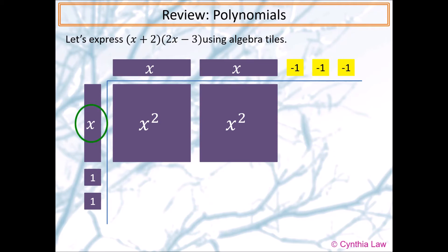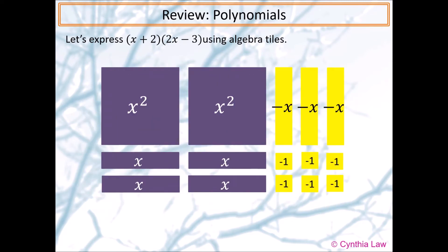x multiplied by negative 1 is negative x. We get two more negative x's in the remaining two slots. We repeat the same process for the next two rows. And we have completed our rectangle.